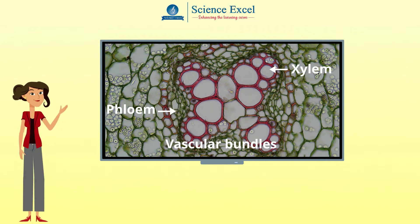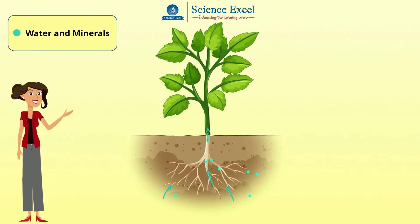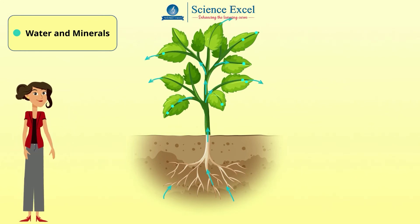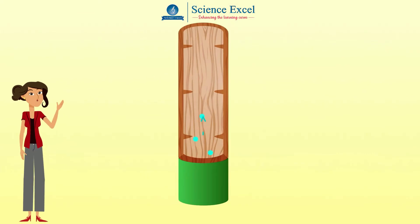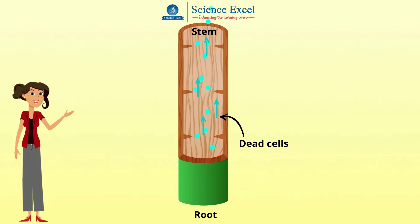Now let us understand what xylem tissues are. Xylem transports water, minerals and ions from the roots to the rest of the plant. This transportation occurs in only one direction, that is from the roots up to the leaves. A xylem vessel is like a long drain pipe which is made up of many hollow dead cells joined end to end, forming a continuous tube running the whole length of the plant.